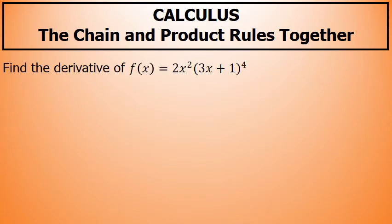When presented with a situation such as being asked to find the derivative of 2x squared times 3x plus 1 to the fourth power, we have to realize that the product rule should be applied. We have a factor of 2x squared and a factor of 3x plus 1 to the fourth power, so I'm going to use the product rule to find this derivative.